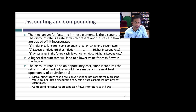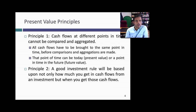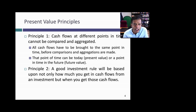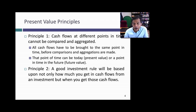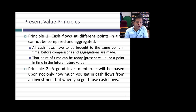Discounting brings future cash flows back to today; compounding converts today's cash flows into future cash flows. A key present value principle is that if you have an investment with cash flows every year for the next 15 years, you can't simply add those cash flows up — cash flows at different points in time are different types of cash flows. They must be brought back to the same point in time before you can aggregate or net them. A good investment rule should be based not only on how much you get, but when you get those cash flows.